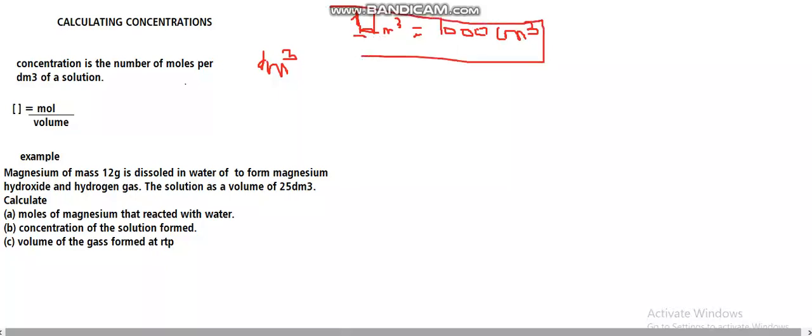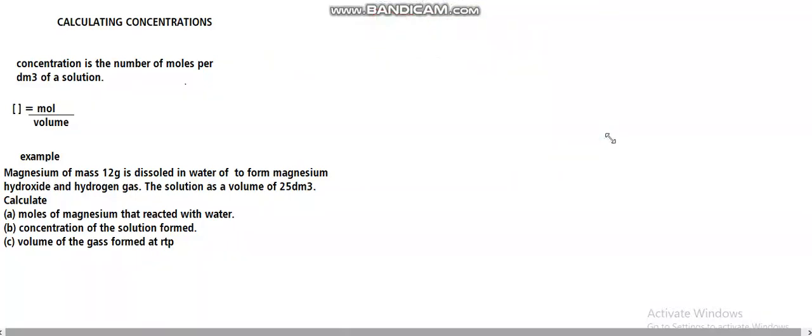Now we have an example. Magnesium of mass 12 grams is dissolved in water to form magnesium hydroxide and hydrogen gas. The solution has a volume of 25 decimetres cubed. Calculate the number of moles of magnesium. First we need to write the full chemical equation for this reaction.